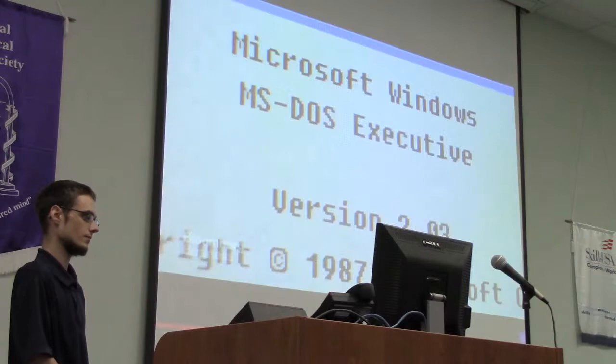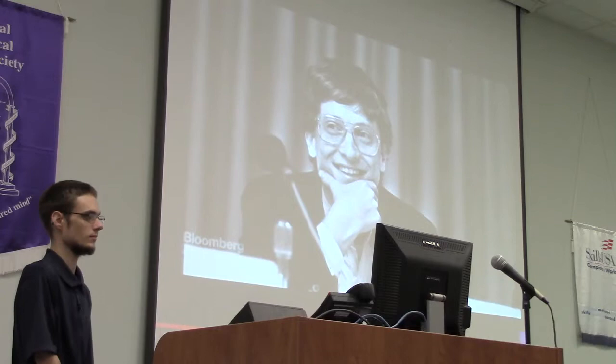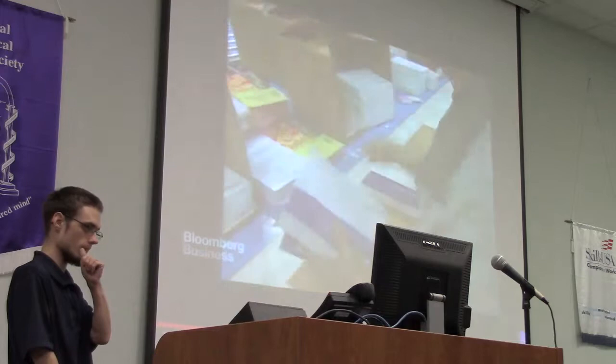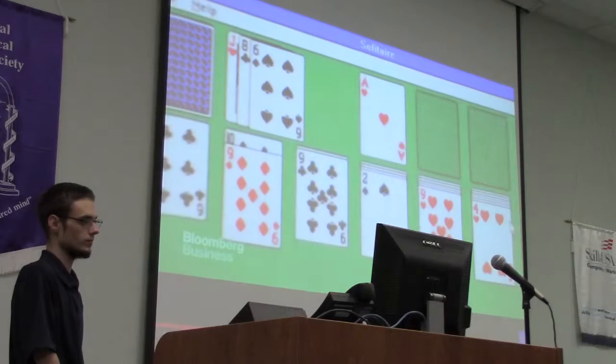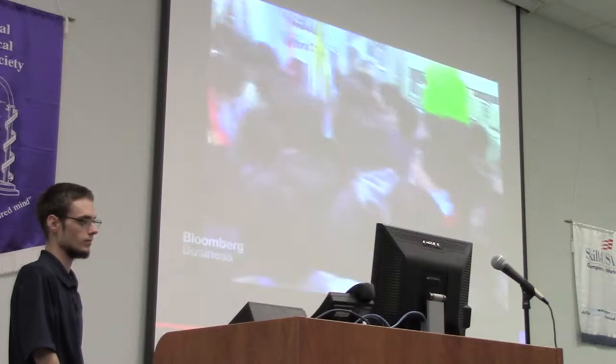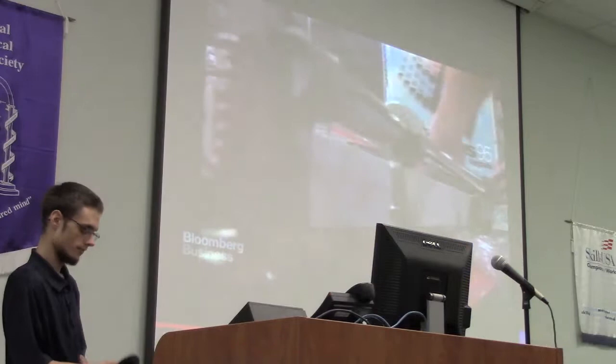In 1987, Windows 2.0 arrived with better graphics including overlapping windows. One year later, Microsoft became and stayed the largest PC software company. In the early 90s, Microsoft sold tens of millions of copies of Windows 3.0 and 3.1. Then Windows mania hit an all-time high in 1995 with Windows 95 — Microsoft sold seven million copies in the first five weeks.